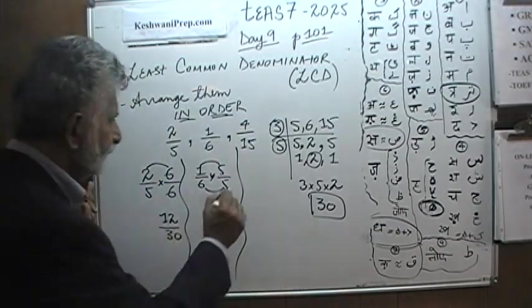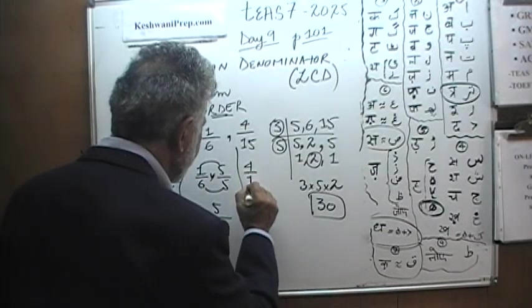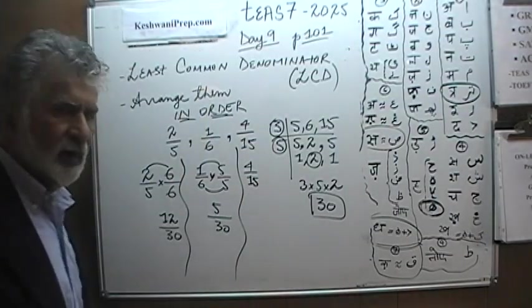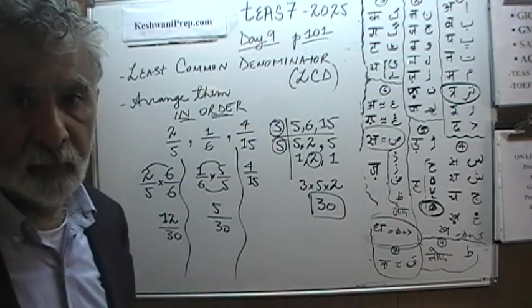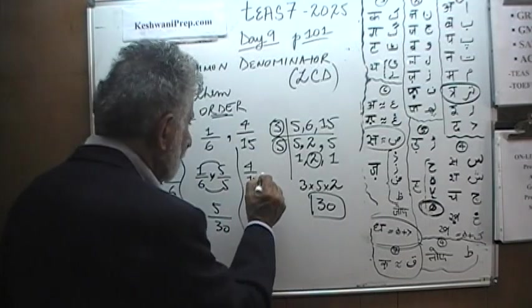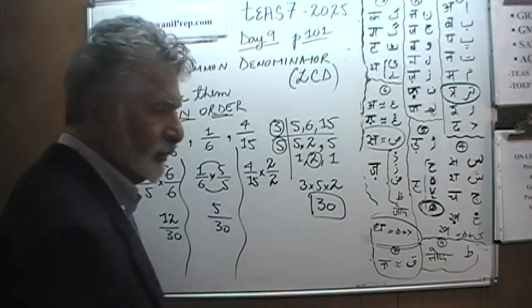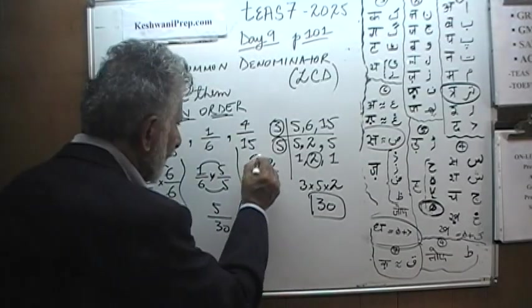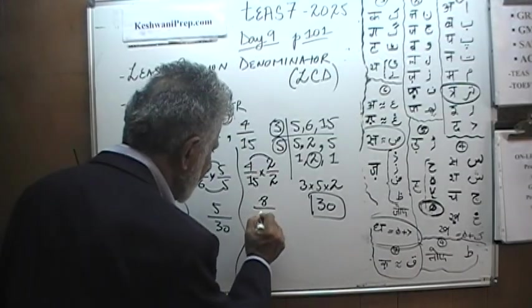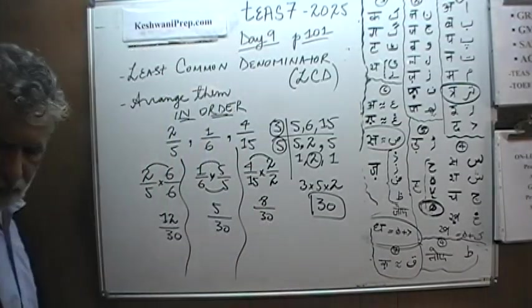We move on to the third one. 4 over 15. How can you convert 15 into 30? Well, very simple. Multiply it by 2. And if you're going to multiply the bottom by 2, you must multiply the top by 2. And that gives us 8 over 30. There we go. We're almost done.